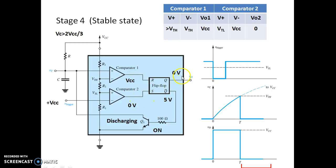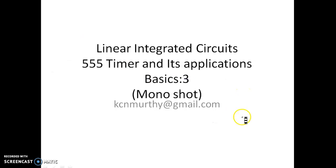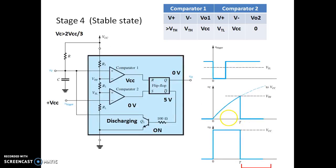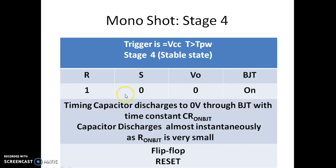So the condition is: reset is high and set is 0, which makes the output 0. Once the output becomes 0, Q-bar becomes VCC (5V), which turns the transistor on. Once the transistor turns on, the capacitor has a path to discharge. The capacitor starts discharging through the transistor because it is turned on. As the capacitor voltage slightly exceeds VTH, it drops down quickly — it is forced to discharge to ground through transistor Q1.